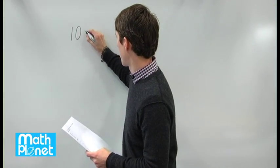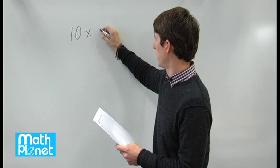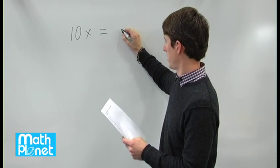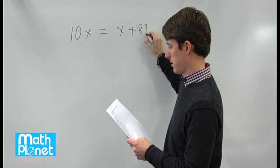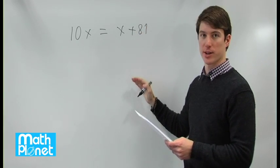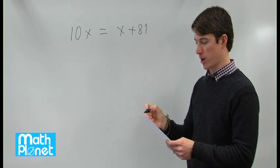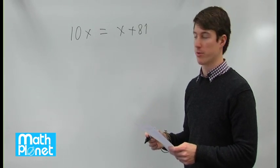If 10 times x is equal to 81 more than x, so x plus 81, we need to solve for x and then see how much more x squared is than the square root of x.